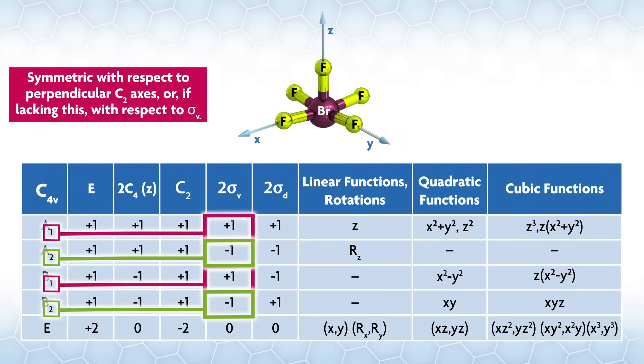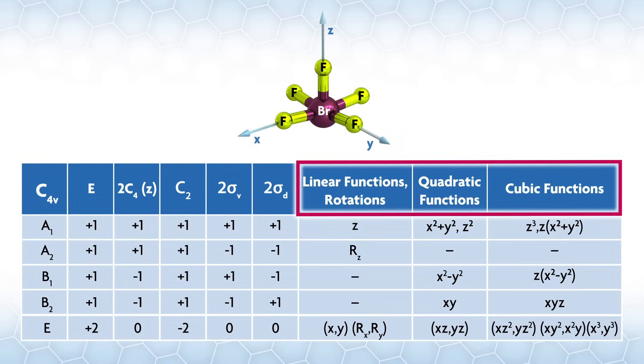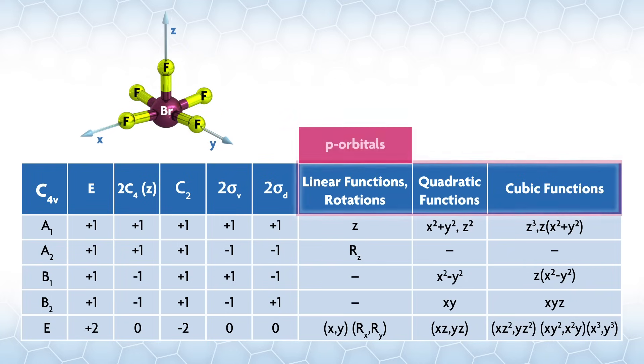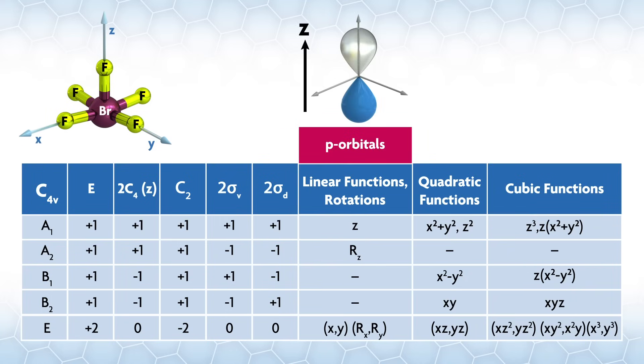If the atom you're looking at resides at the central point where all the operations meet, like Br in our example, you can look to the right of the irreducible representations to see the symmetries of those orbitals. The p orbitals have the same symmetry as linear functions, namely they're similar to vectors along the axis directions, with a positive and negative phase. The d orbitals are quadratic functions, and the f orbitals are cubic.